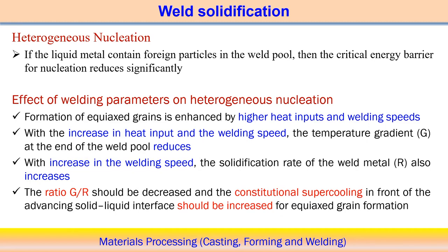Grain detachment is also another mechanism — weld pool convection current partially melts a grain that is detached from the solid-liquid mixture. From the solid-liquid mixture, the grains can be detached, acting as sites for heterogeneous nucleation. Heterogeneous nucleation itself is another mechanism: foreign particles present in the weld pool can start the nucleation process after crossing the critical energy barrier. In heterogeneous nucleation, the presence of foreign particles reduces the critical energy required to start the process.